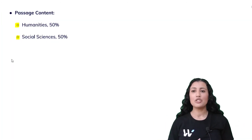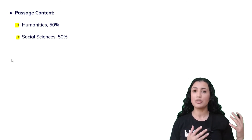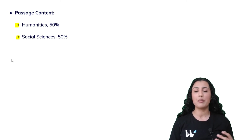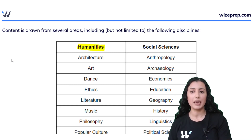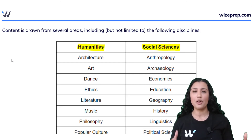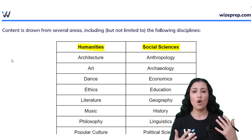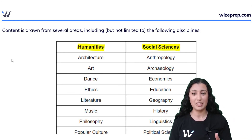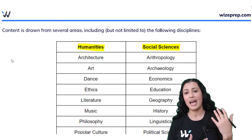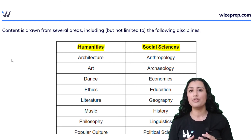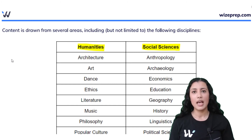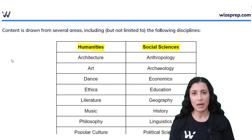As for the CARS passages themselves: 50% will talk about some topic related to humanities and 50% will relate to social sciences. Some passage topics seem very random and unrelated to medicine — like dance and music — but you could see any of these topics on the MCAT. What's nice about CARS is that you don't need to study each of these topics. Instead, you need to learn all the different skills. Once you learn those, it's repeating patterns that allow you to answer questions on any type of CARS passage.